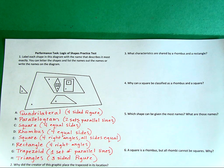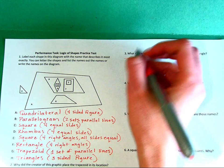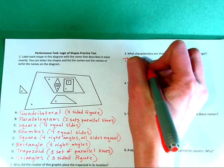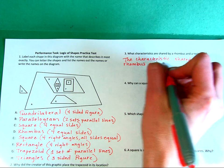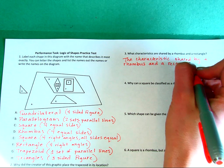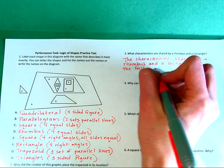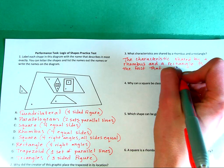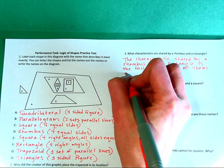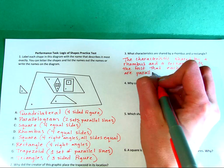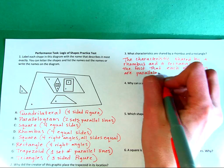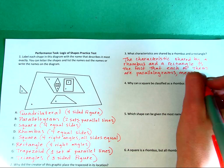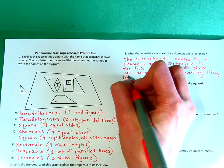Remember to restate your question in your answer. The characteristic shared by a rhombus and a rectangle is that each of them are parallelograms, meaning they both have two sets of parallel lines.